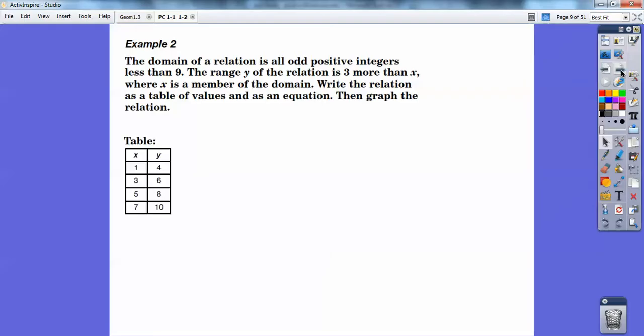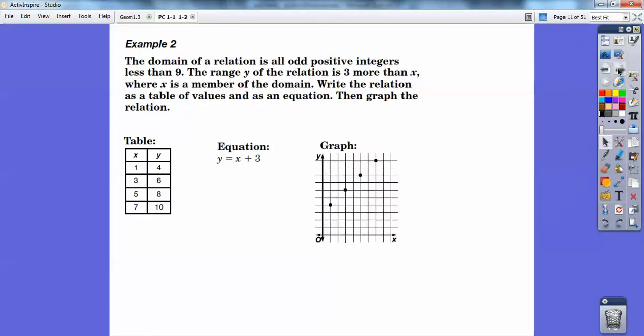So there's a table of values right there. So it's all the odd positive numbers less than 9. And then add 3 to all those. Here's 1 plus 3, 3 plus 3, 5 plus 3, 7 plus 3. So it's always x plus 3, y equals x plus 3. And then graph them. Don't connect them with the straight line. They're just ordered pairs. So there's the graph.